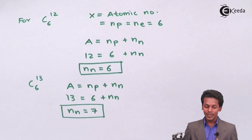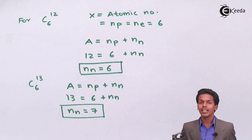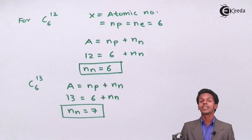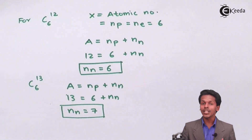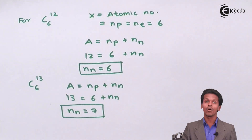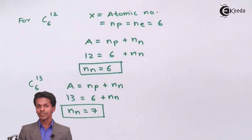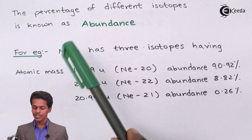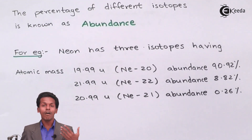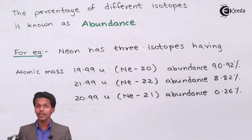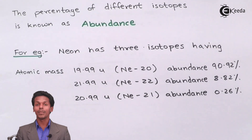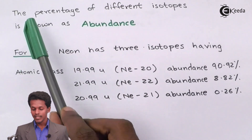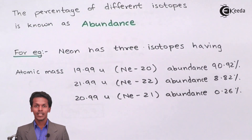In nature, many elements have such isotopes, and it is necessary to know which isotope should be considered in the calculation of a particular chemical reaction, stoichiometry, or any other case. For that, we have a term known as abundance — among all the isotopes present for an element, we consider those which are present in greater quantity. The percentage of different isotopes is known as abundance.